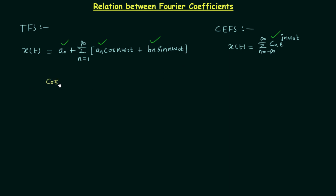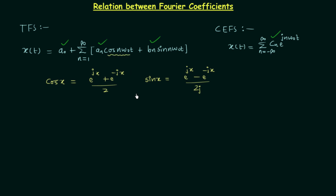We already know that cos(x) can be written as (e^(jx) + e^(-jx)) / 2, and sin(x) can be written as (e^(jx) - e^(-jx)) / 2j. So in place of cos(n·ω₀·t) we will have (e^(jn·ω₀·t) + e^(-jn·ω₀·t)) / 2, and similarly for sin, since here x = n·ω₀·t.